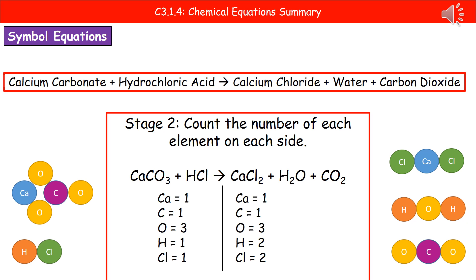We have one calcium, one carbon, three oxygens, one hydrogen and one chlorine on the reactants side. If we look at our products on the right, we have one calcium, one carbon, three oxygens, but two hydrogens and two chlorines. So instantly we can see because those numbers on the left and the right are different, this isn't a balanced equation. So we've got to do something to it.